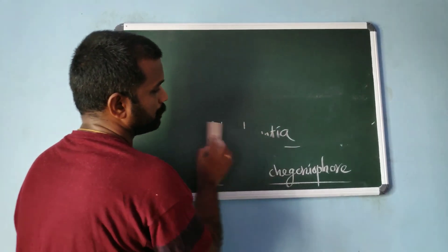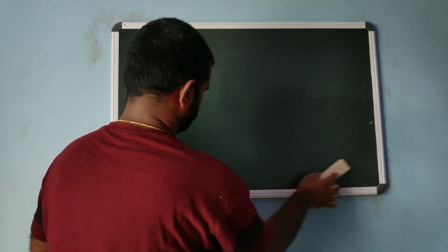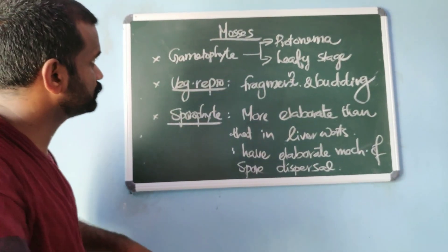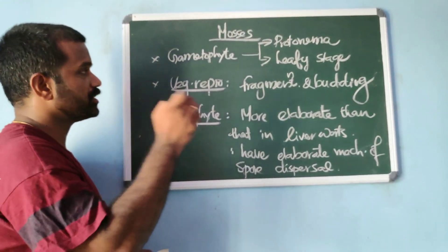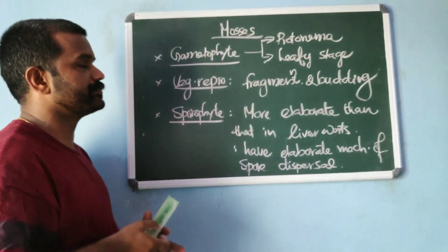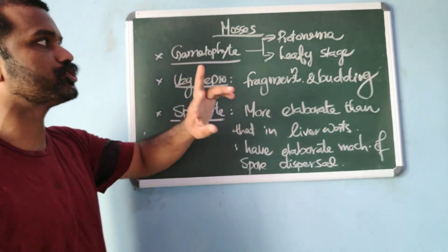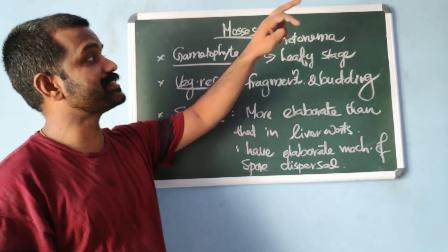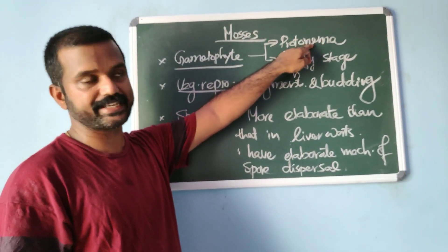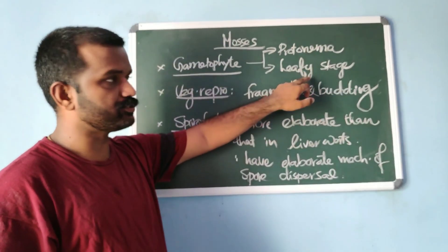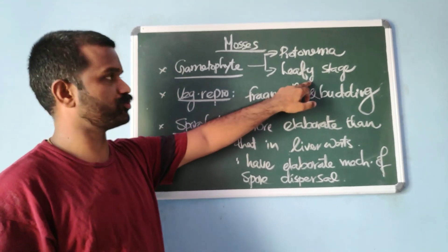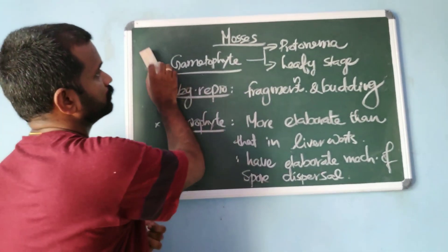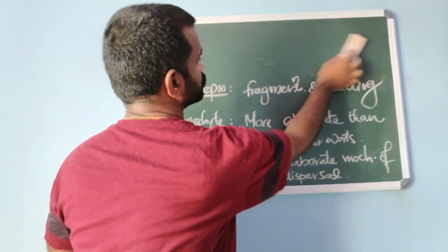Now about mosses in detail. One speciality of mosses is that the gametophyte consists of two stages: a protonema stage and a leafy stage. The protonema stage is the first stage.